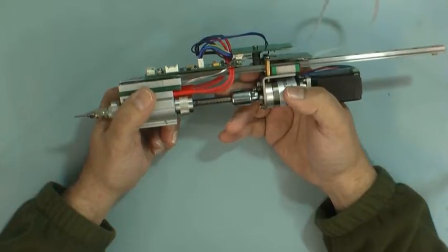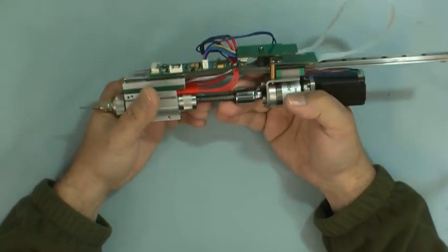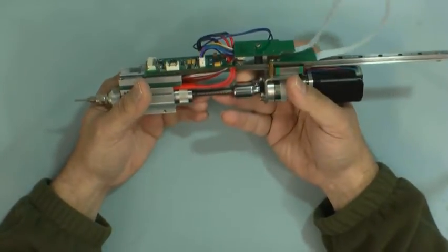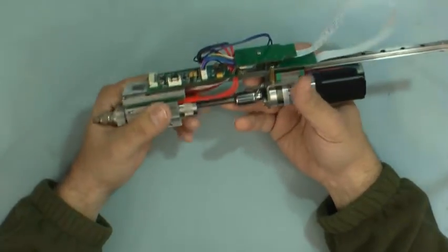That would be an M106 command with S and then the number would be your percentage of duty cycle. So S50, S0, S100, S whatever you want.